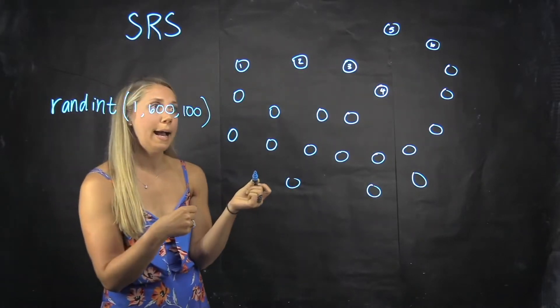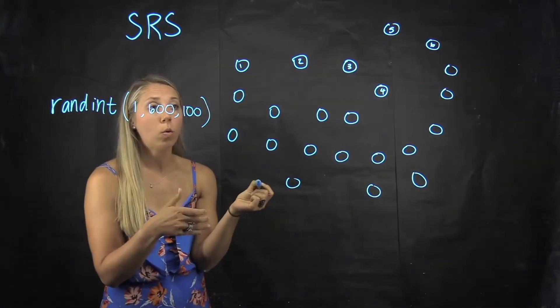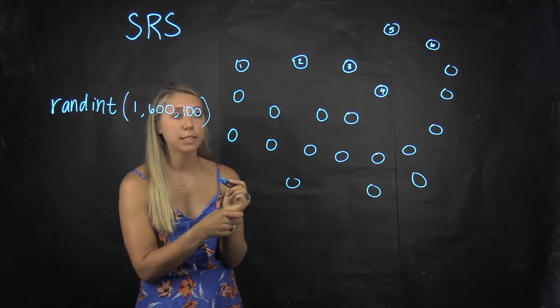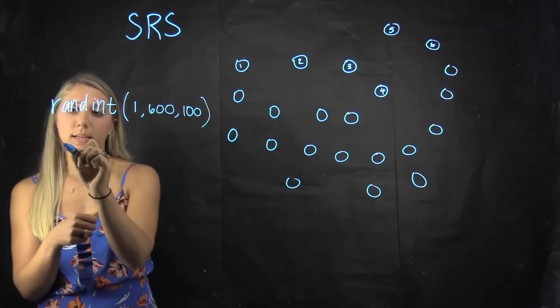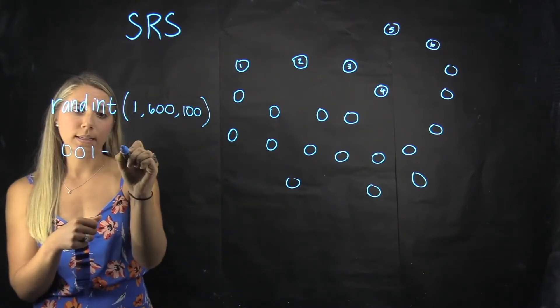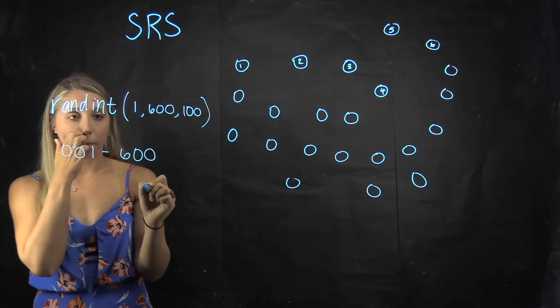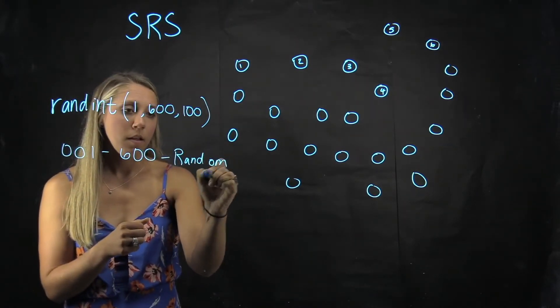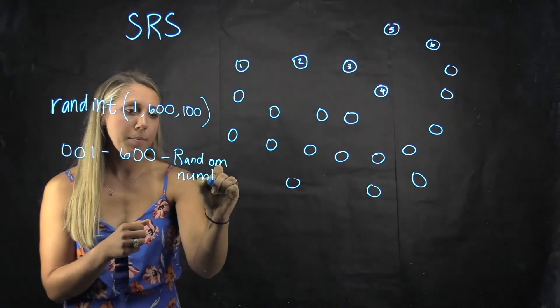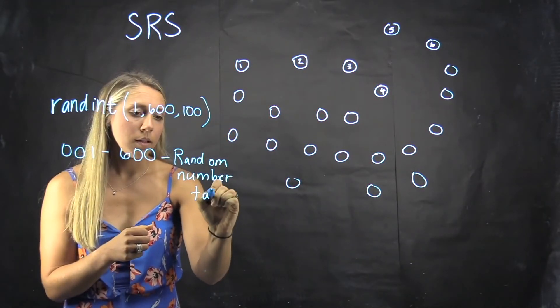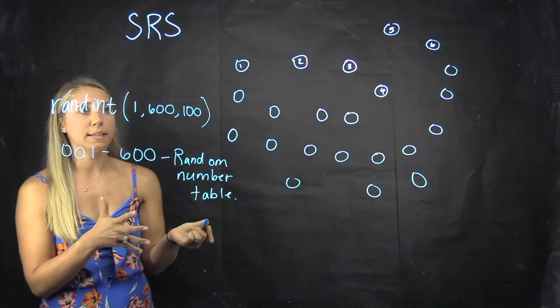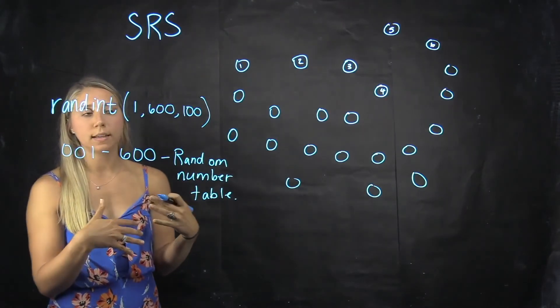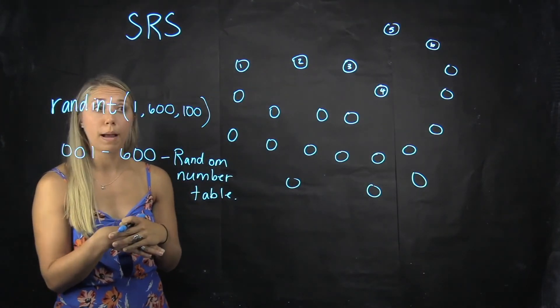Or you can look one up, taking 100 three-digit numbers from, say, 001 to 600 from a random number table. So this is the simplest way to select a random amount of people from your population.